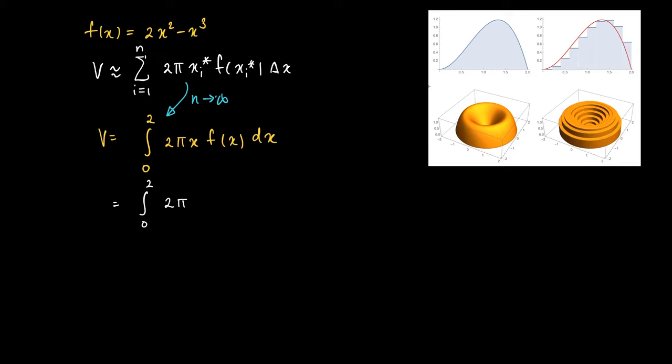So now we can just plug in this cubic function. So 2π x times 2x squared minus x to the power 3. And we're left with an easy integral.